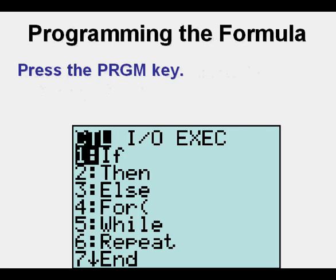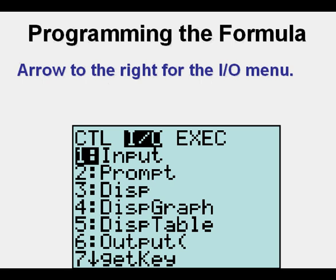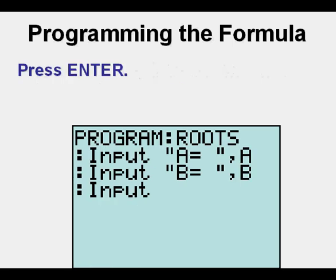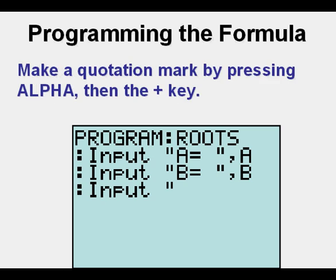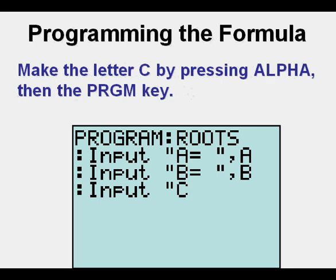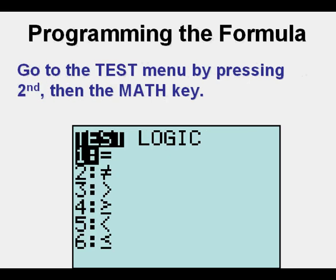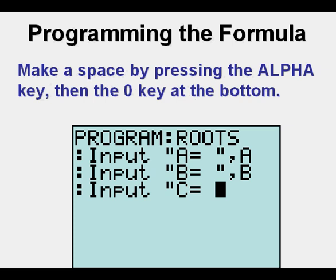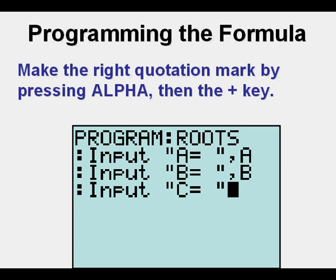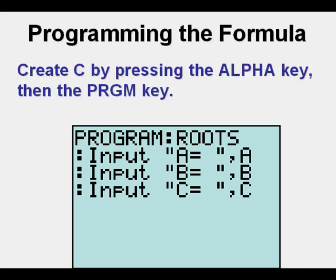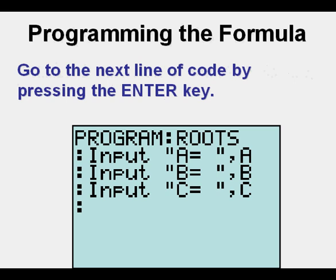Start the third line of code by pressing Enter. Press the Program key, then arrow once to the right for the input-output menu. Press Enter. Make a quotation mark by pressing Alpha, then the Plus key. Make the letter C by pressing Alpha, then the Program key. Go to the Test menu by pressing Second, then the Math key. Press Enter. Make a space by pressing the Alpha key, then the Zero key. Make the right quotation mark by pressing Alpha, then the Plus key. Press the Comma key. Create C by pressing the Alpha key, then the Program key. Go to the next line of code by pressing Enter.